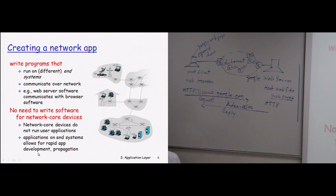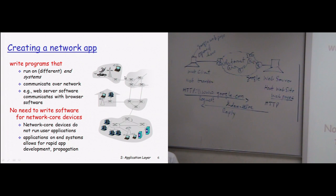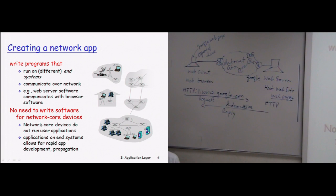Applications on end systems allow for rapid application development and propagation. These are the end clients running client applications and these are the servers running server applications. In our example, this is the web client and its request will be forwarded by intermediary devices to the web server — the Google web server.